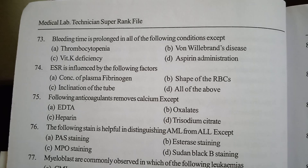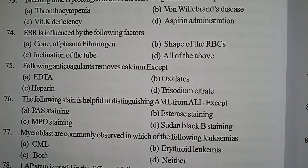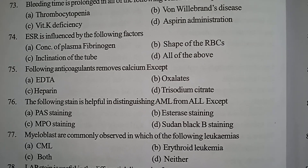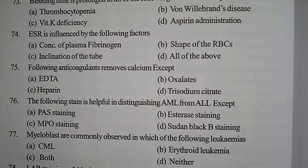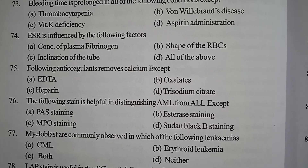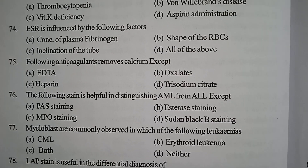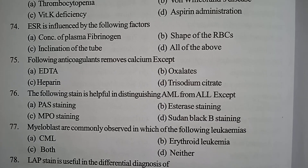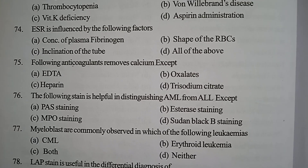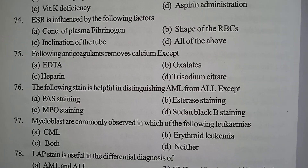Next one: the following stain is helpful in distinguishing AML from ALL except? Option A: PAS staining. Option B: esterase staining. Option C: myeloperoxidase staining. Option D: Sudan black B staining. Correct answer: option B, esterase staining, which is not used to distinguish AML from ALL.